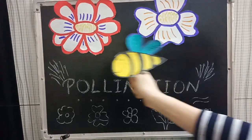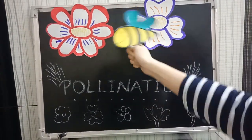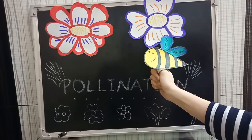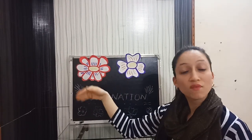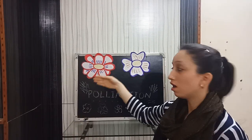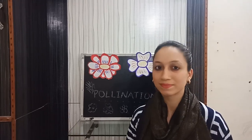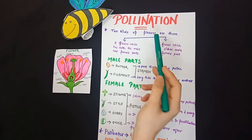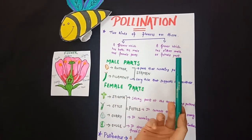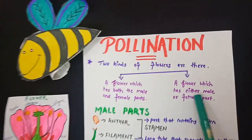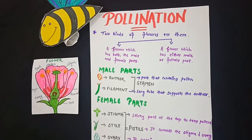Beautiful flowers — want to know what's inside? The transfer of pollen grains from the anther of a flower to the stigma of a female flower is known as pollination. There are two kinds of flowers: a flower which has both male and female parts, and a flower which has either a male or female part.